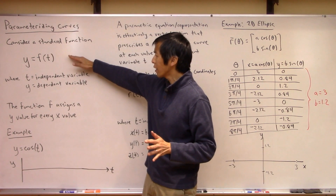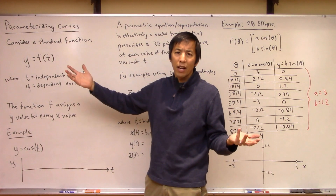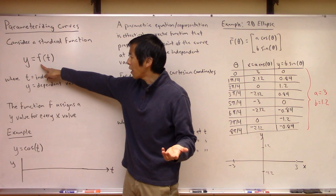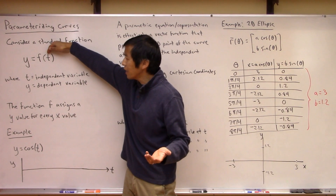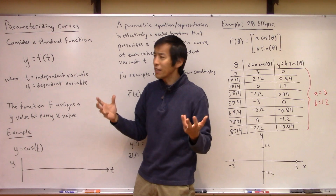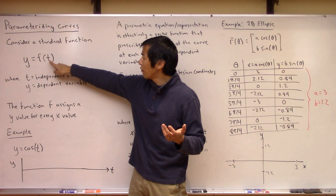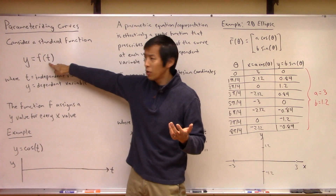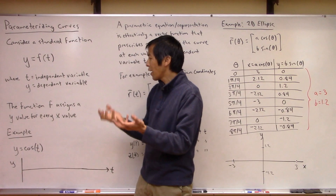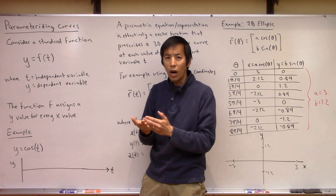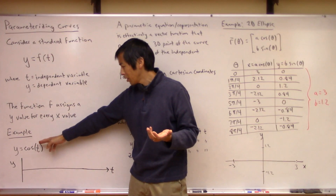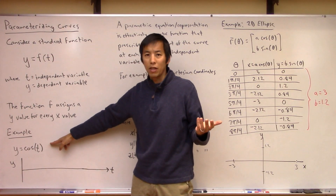To do this, let's take a step back and consider your standard idea of a one-dimensional function. The idea here is you might have some function f, where you have t as some independent variable and y as a dependent variable. You give it a value of the independent variable and this thing will tell you the value of the dependent variable. So this function f effectively assigns a value y for every value of x. As a really simple example, y equals cosine of t.